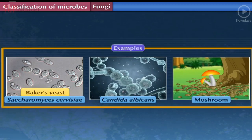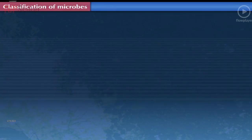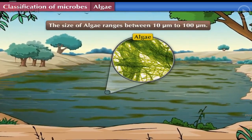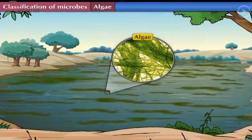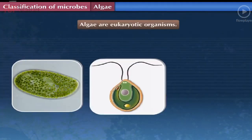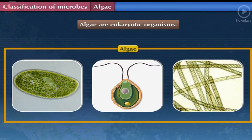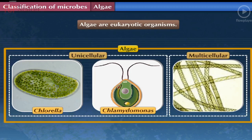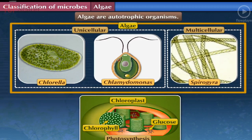Algae: The size of algae ranges from 10 micrometers to 100 micrometers. Algae are aquatic eukaryotic organisms. Very few species are unicellular, like Chlorella and Chlamydomonas; most algae are multicellular and visible with the naked eye, for example Spirogyra. Algae are autotrophic organisms — photosynthesis is carried out with the help of chloroplasts present in their cells.